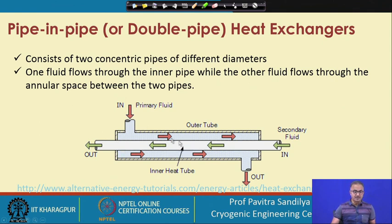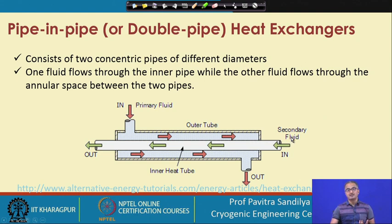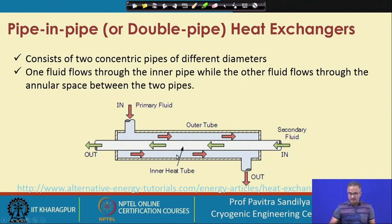One fluid flows through the inner pipe while the second fluid flows through the annular space between the two pipes. The primary fluid may be the process fluid and the secondary fluid is the utility fluid. If the primary fluid has to be heated, the secondary fluid must have a higher temperature; if it needs to be cooled, the secondary fluid must be at a lower temperature. The two fluids take different control volumes for their passage — that is how pipe in pipe heat exchangers are constructed.